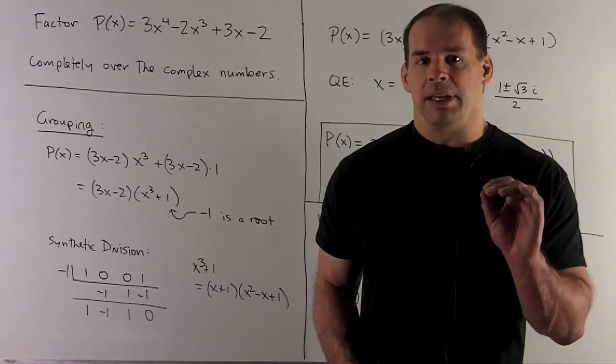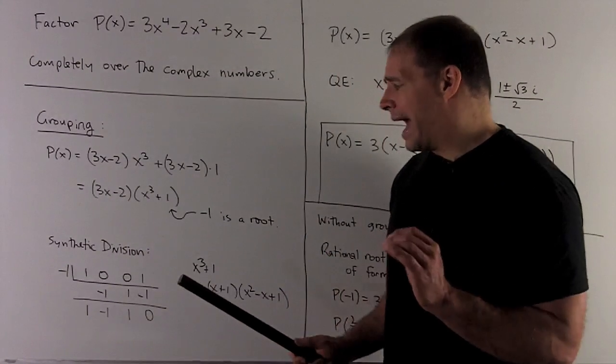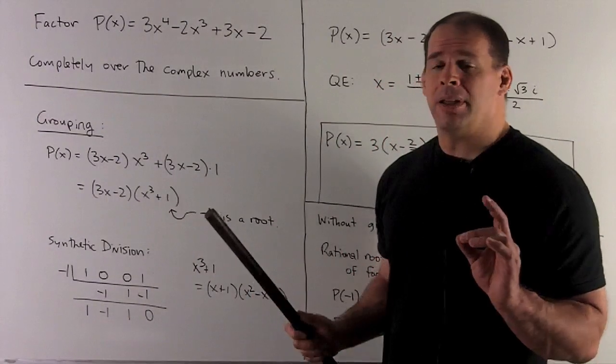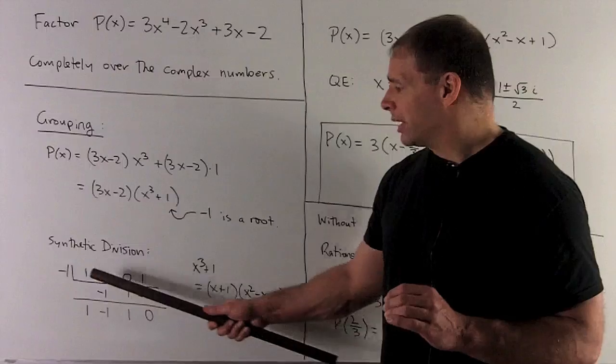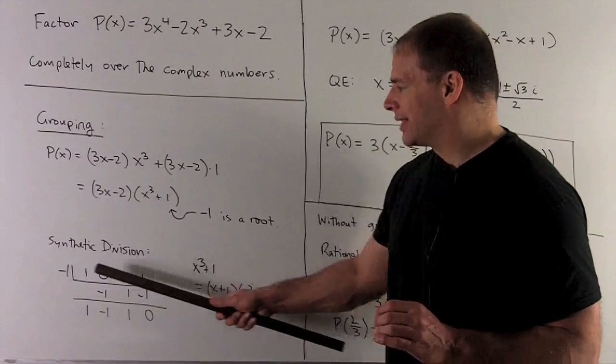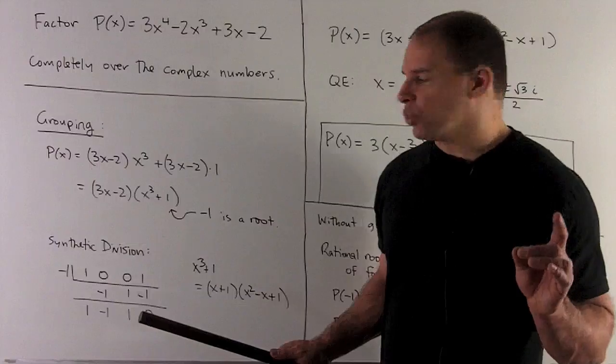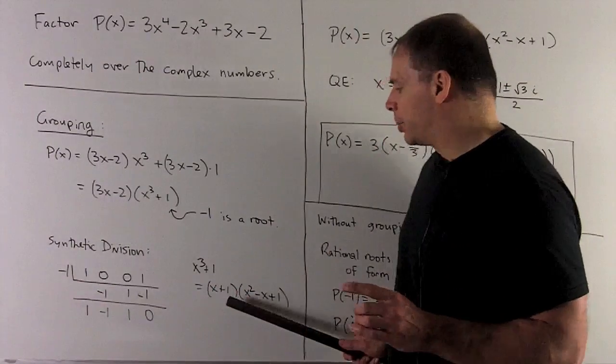So that means x + 1 divides into x^3 + 1. The way I read this is, here's our original: x^3 + 1 equals x minus your root, so it's going to be x + 1.